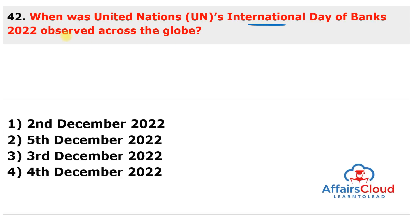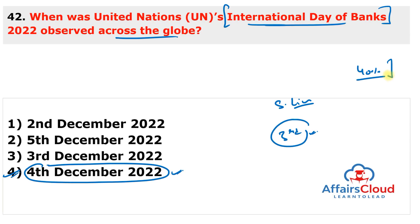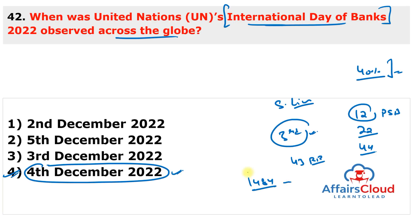Question 42: When was the UN International Day of Banks 2022 observed? It was observed on 4th December 2022 — marking the 3rd International Day of Banks — to recognize the vital role of banking in improving living standards. According to India Brand Equity Foundation, India accounts for 40% of global digital transactions. India's banking system consists of 12 public sector banks, 22 private sector banks, 44 foreign banks, 43 regional rural banks, 1,484 cooperative banks, and 96,000 regional cooperative banks.